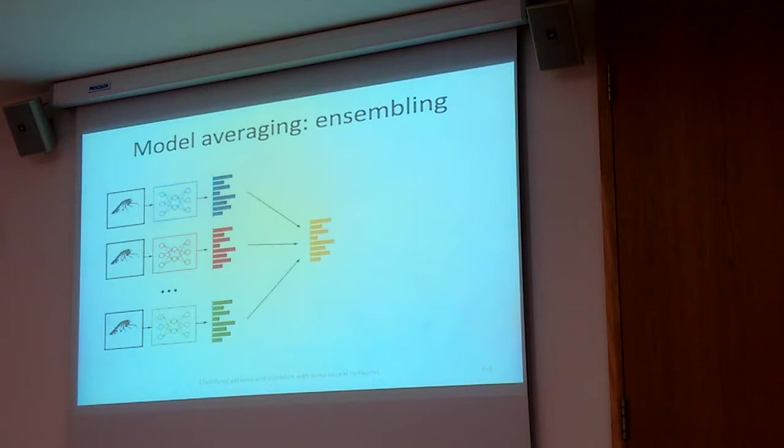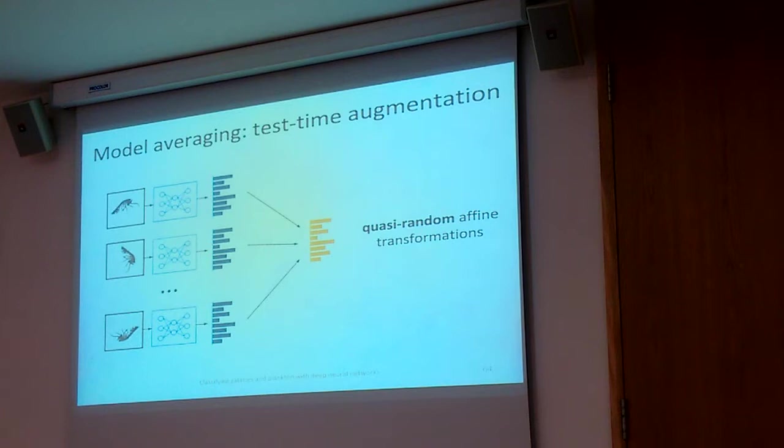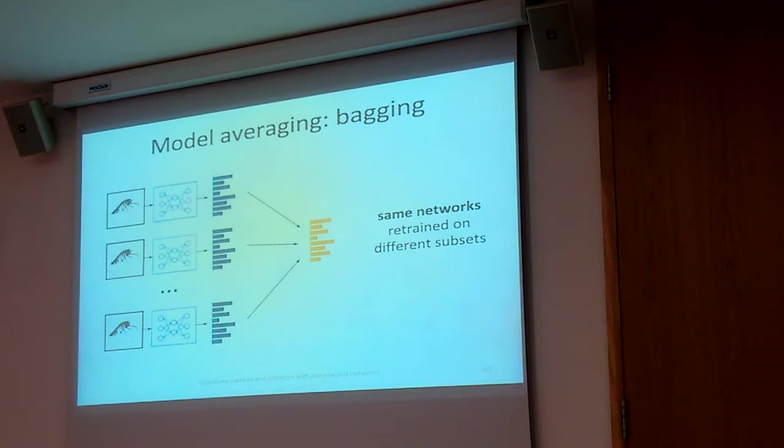And then the model averaging story is the same as with galaxies. So ensembling, test time augmentation - so averaging across model transformations. And then one other thing here that we did was bagging. So we trained the same model on multiple different subsets - 90% subsets of the training data - and averaged the results. And that also gave us a slight boost.